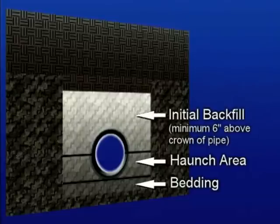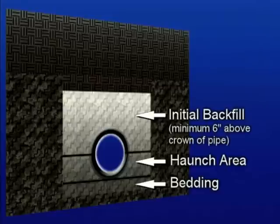The initial backfill area extends to a minimum of 6 inches above the crown of the pipe. Only approved backfill material should be used in the bedding, haunch, and initial backfill areas of the trench.